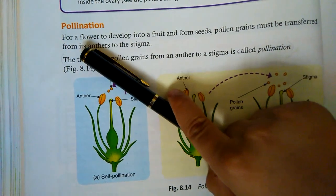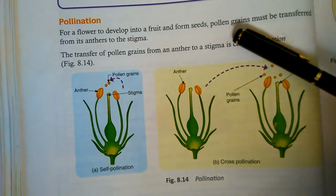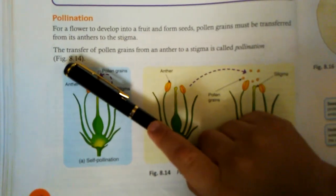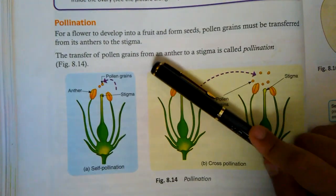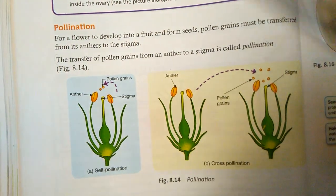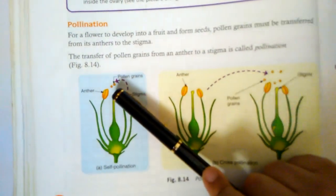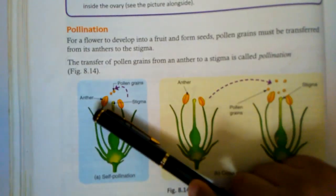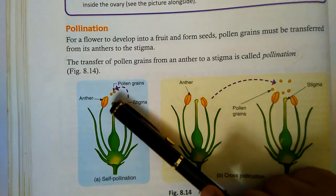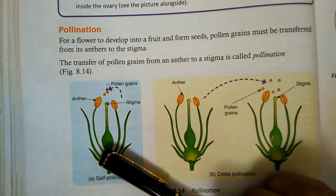Pollination. For a flower to develop into a fruit and form a seed, pollen grains must be transferred from the anther to the stigma. The transfer of pollen grains from an anther to the stigma is called pollination. The anther contains pollen grains. When air comes, pollen grains stick to the stigma. The stigma transfers the pollen grains to the ovary, and the ovary makes a seed or a fruit.